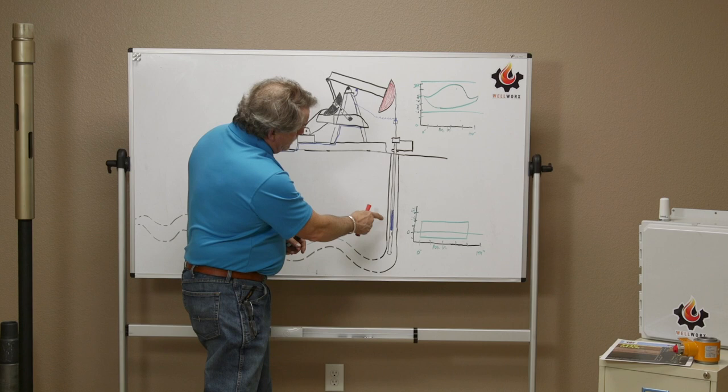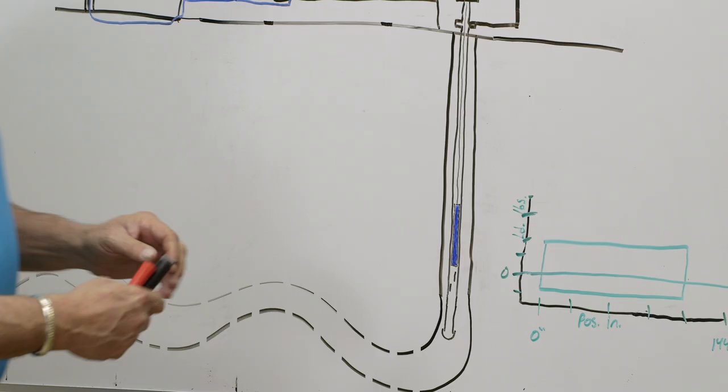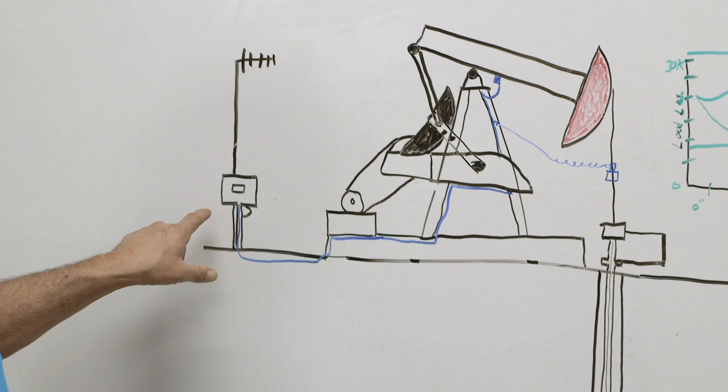Rod string goes down into the well. This well could be anywhere from maybe as shallow as 500 feet to as deep as 10, 11, 12,000 feet. In this case we do have, and most wells, common wells these days have a pump off controller.